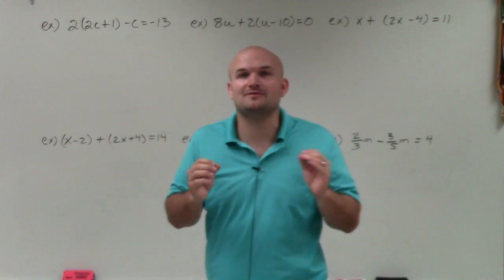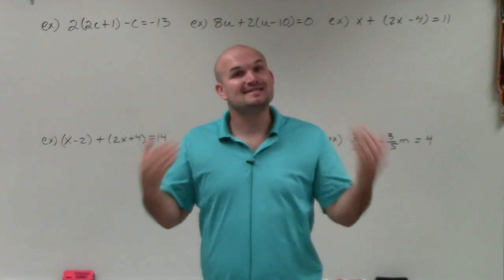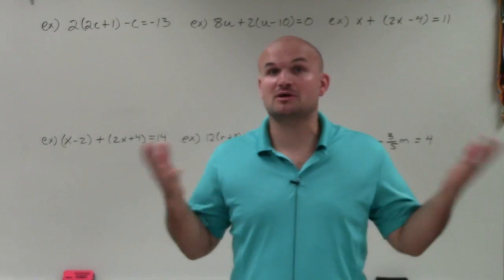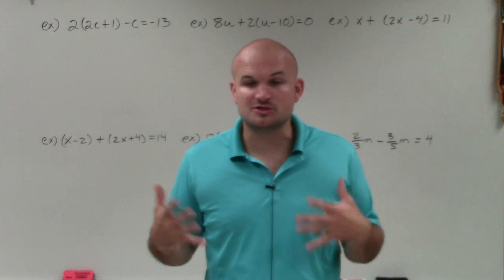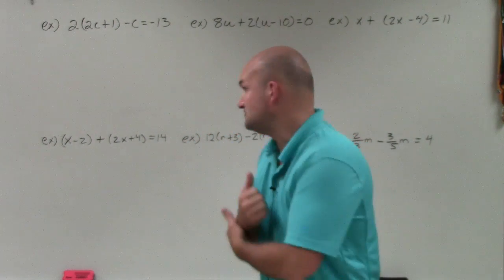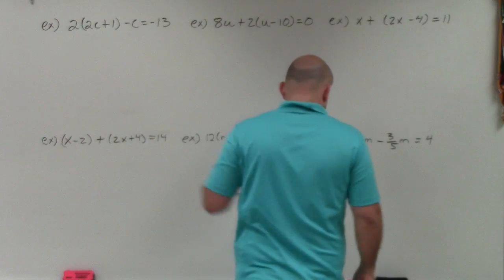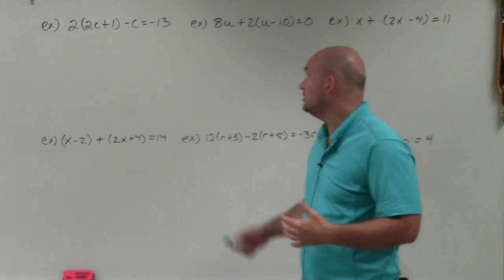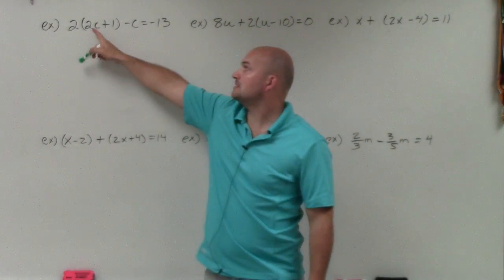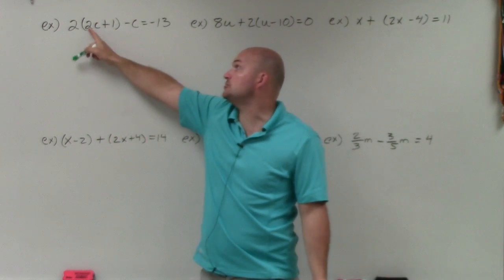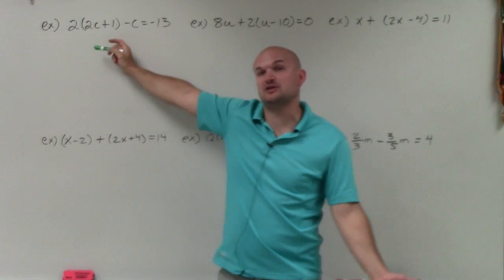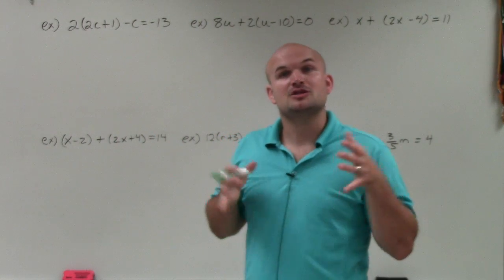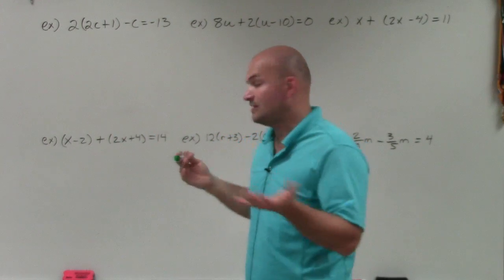To combine the variables, we do what we call simplifying. When you learn to simplify expressions and combine like terms, that's basically what we're going to do. In this first example, we cannot combine any variables until we've applied the distributive property to 2 times (2c + 1), so we need to get rid of the parentheses.